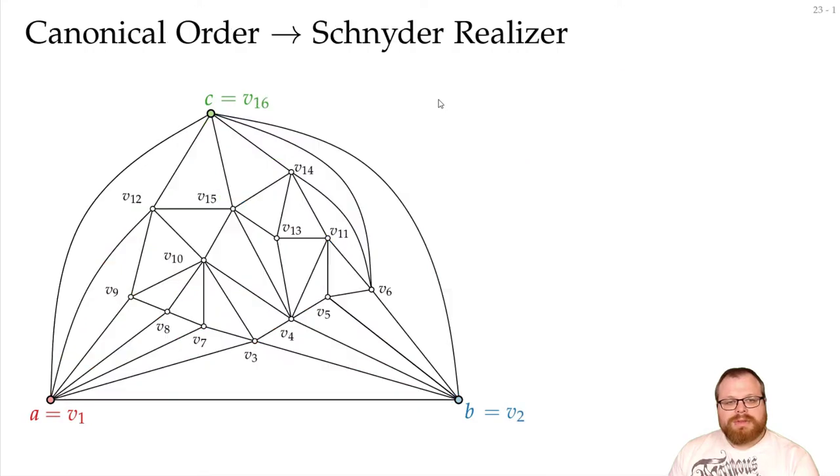But we can also go the other direction. Let's say we have a canonical order, we can calculate a Schnyder realizer from it. For that, we will start with the last vertex of the canonical order. When we remove it, we get a left-most edge, a right-most edge, and some middle edges.